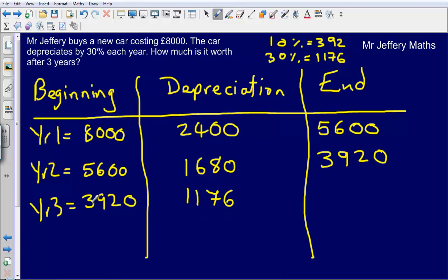So now all I need to do is take away this amount from the amount that I started year 3 with. So that gives me an answer of £2,744.